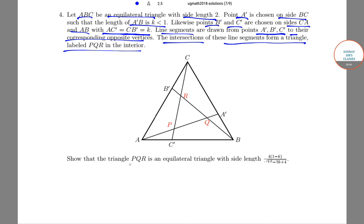Show that triangle PQR is an equilateral triangle with side length 4(1-k)/√(k²-2k+4).